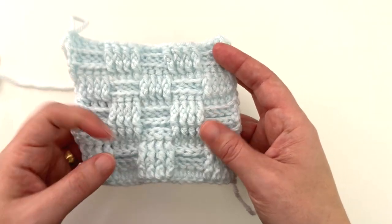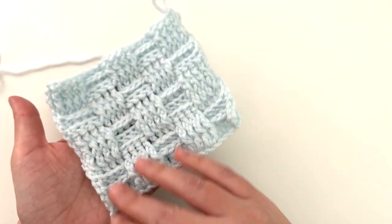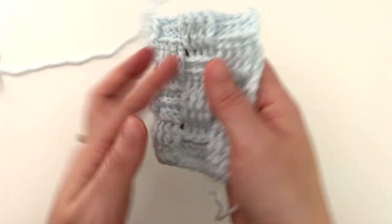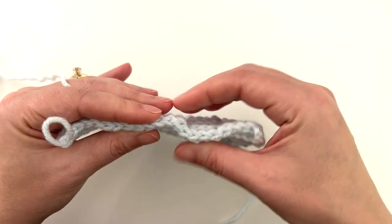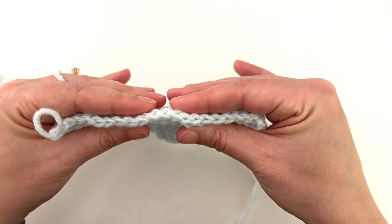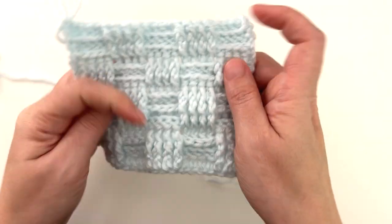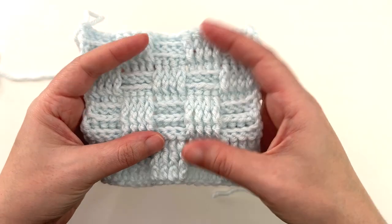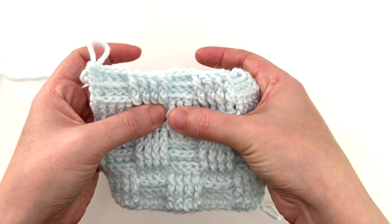Here I have my completed swatch. And it's just a little bitty one. But I just wanted to show you that it is double sided, which is nice. And it is a little wavy. So if you block it, it's going to lay down a little more, but you're not ever going to completely get rid of that, which is part of the charm of this fabric.